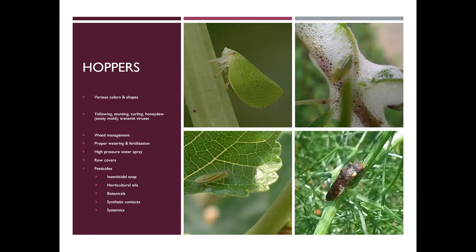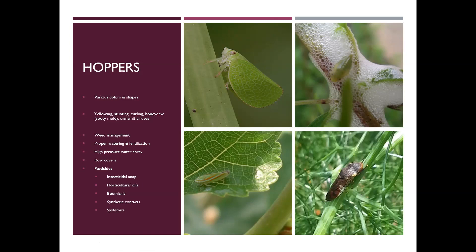One exception is the spittlebug — if you see what looks like spit on plants and dig inside, you'll find an immature hopper insect called a spittlebug. Also worth mentioning is the sharpshooter: these generally don't cause enough direct feeding damage, but they are known to transmit a bunch of different viruses, which is why you would want to target controlling them if you see them in the landscape.